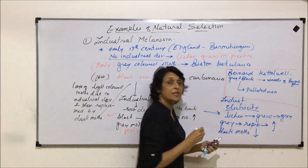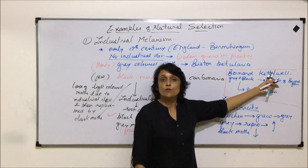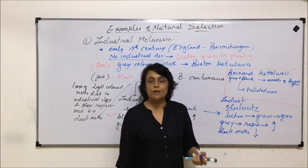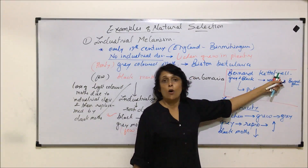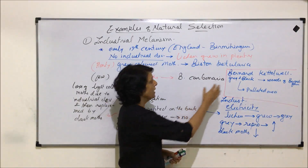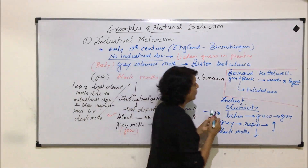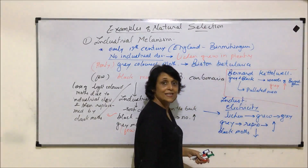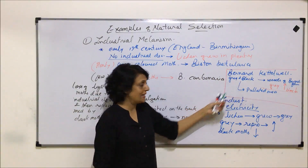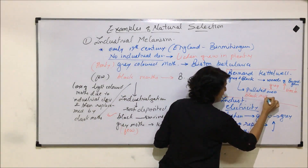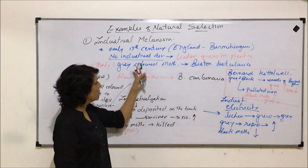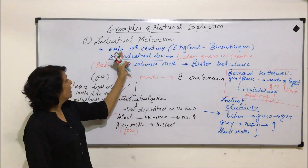After a few months, Kettlewell observed that in the woods of Birmingham — where pollution was very low, with no industries or human habitation — the gray-colored moths were greater in number. He had introduced equal numbers of gray and black moths in both areas. In the woods, the gray number increased and black were very few. In the polluted area, the reverse occurred: the black moths were very high in number and the gray moths were very few — exactly what had happened during the natural industrial melanism.